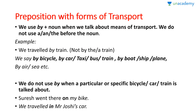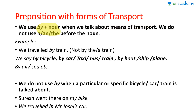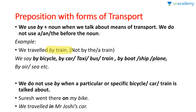Starting with the forms of transport. When we talk about means of transport, we use 'by' plus noun. The important thing to note is that before this noun, we will not use any article — no 'a' and no 'the'. For example: we traveled by train. We will not say 'by the train' or 'by a train' — that is wrong.